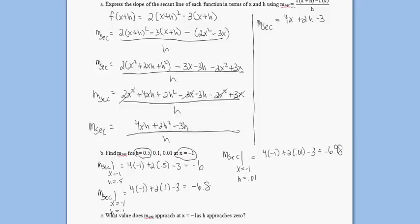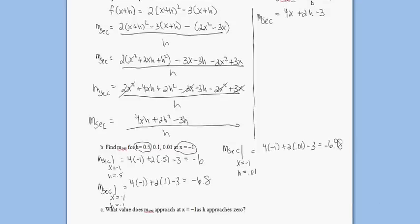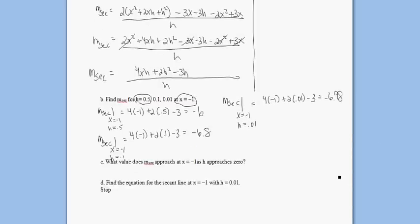This answers the question: what happens to the slope of our secant line as h approaches 0, or as h gets very, very small? Notice it goes from negative 6 to negative 6.8 to negative 6.98 — it's getting closer and closer to negative 7.